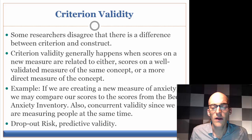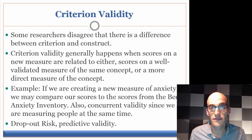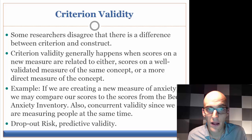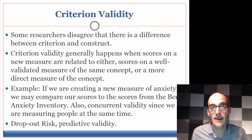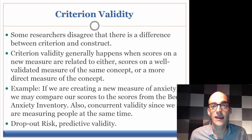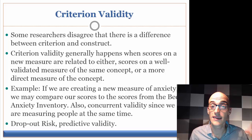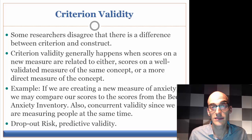Criterion validity is related to construct validity — it measures whether or not items are strongly related to other validated measures in the field and whether they have predictive qualities. An example would be looking at how a new measurement compares to the Beck Anxiety Inventory, which is considered a gold standard. If looking at criterion validity for depression, we might see whether a sample scored similarly on the Beck Depression Inventory as on this new measurement. Predictive validity is a type of criterion validity that examines whether the measurement tool can predict future behaviors.